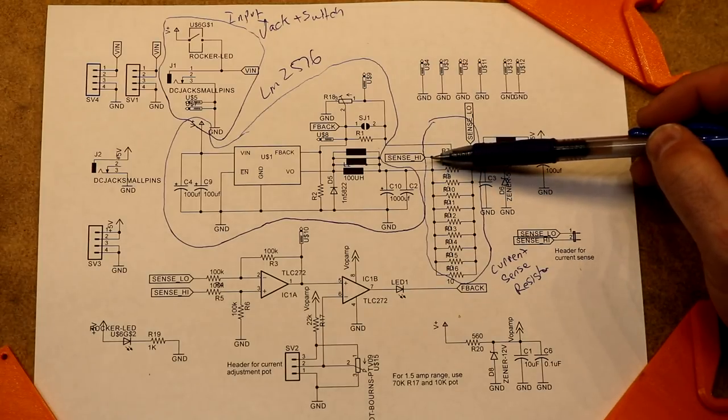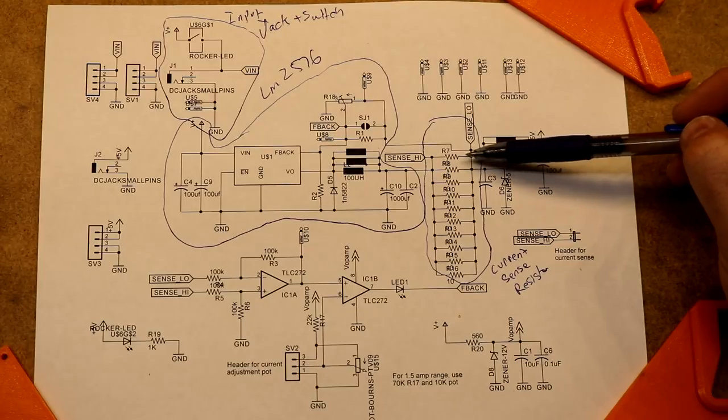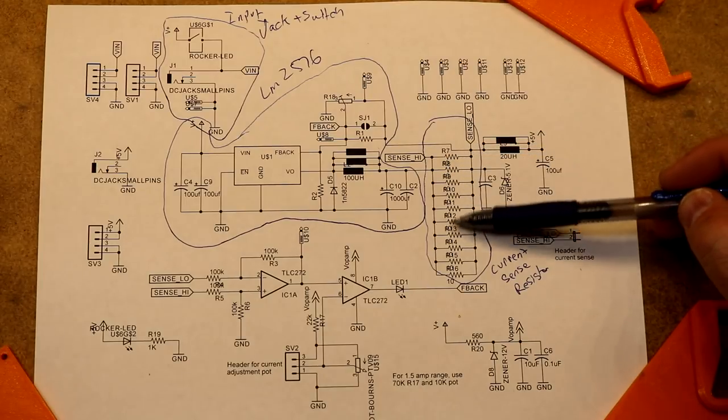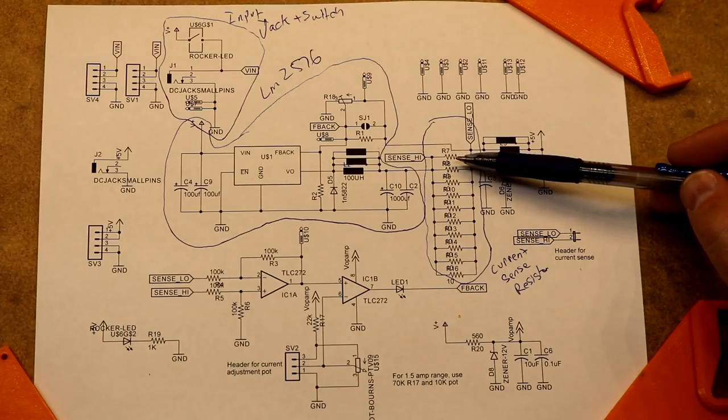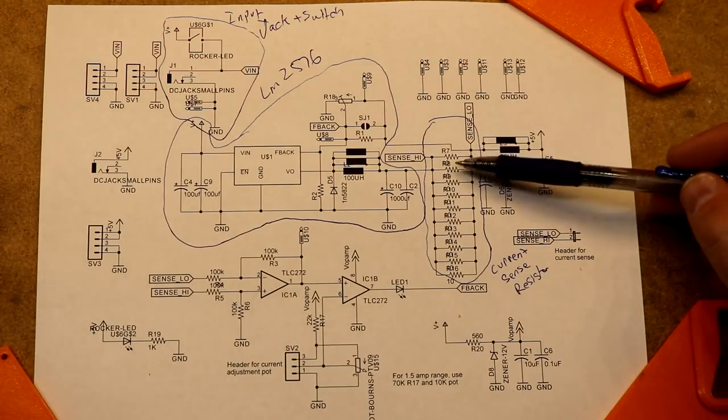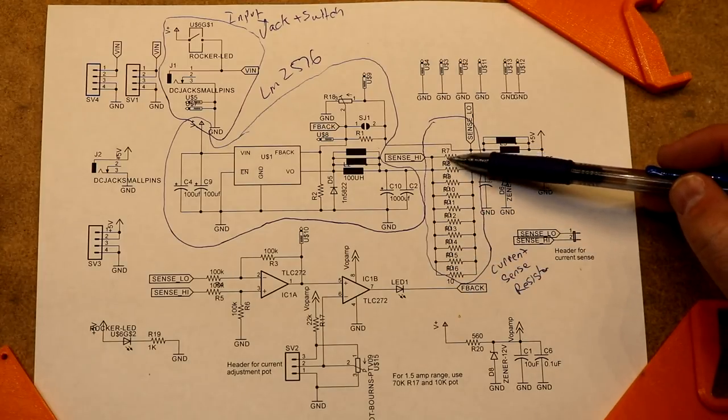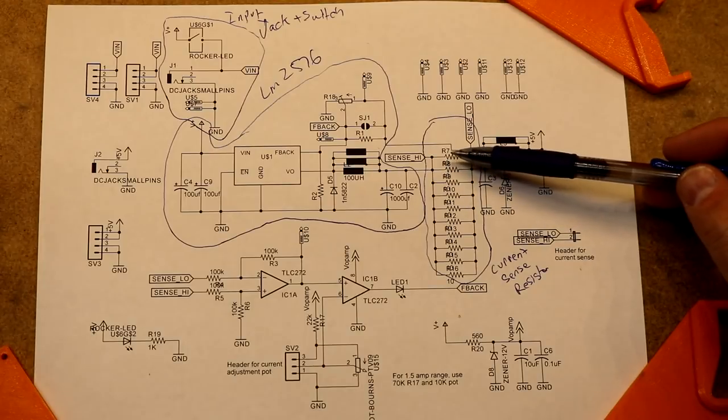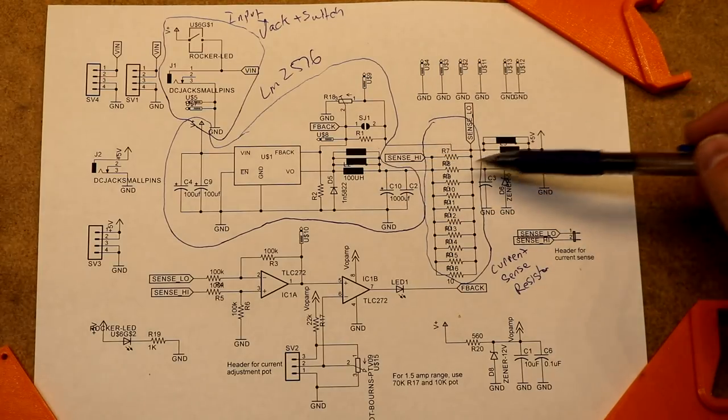Over here on the output side of the LM2576, we have the current sense resistor. So we need to be able to measure the amount of current that this thing is putting out. So one way to do that is with a 1 ohm resistor. If you put the power coming out of the regulator into a 1 ohm resistor, by Ohm's law, you know that if you measure 1 volt across that resistor and it's 1 ohms, that means 1 amp is flowing through it. If you measured half a volt across a 1 ohm resistor, you'd know half an amp is going through it. So it's very easy to measure voltage through that resistor.